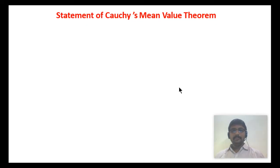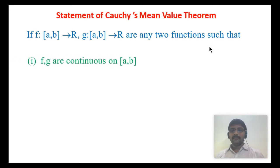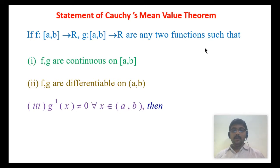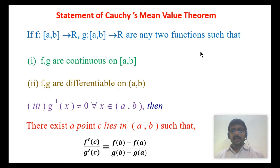Statement of Cauchy's mean value theorem: If f from closed interval [a,b] to R and g from closed interval [a,b] to R are any two functions such that f and g are continuous on closed interval [a,b], differentiable on open interval (a,b), and g'(x) is not equal to 0 for all x in open interval (a,b), then there exists a point c in open interval (a,b) such that f'(c) divided by g'(c) equals f(b) minus f(a) divided by g(b) minus g(a).